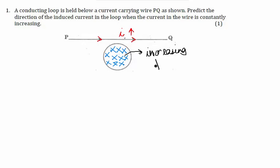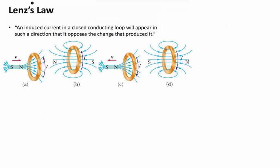Now obviously, the concept that will help us to find out the direction of the induced current is a very important concept which is known as Lenz's law. Now Lenz's law states that an induced current in a closed conducting loop will appear in such a direction that it opposes the change that produced it.